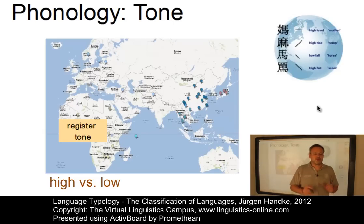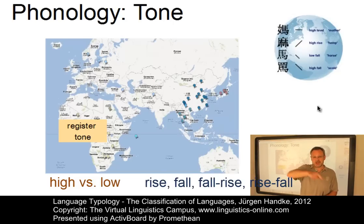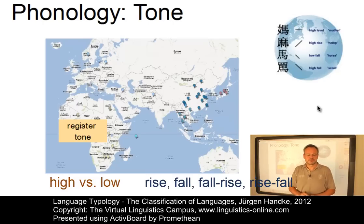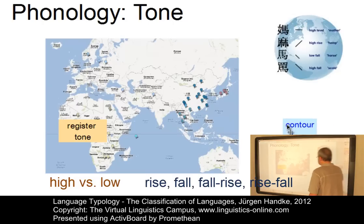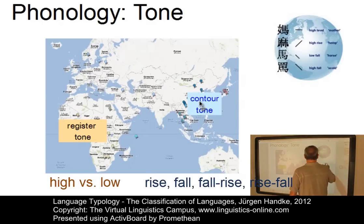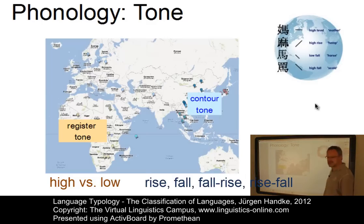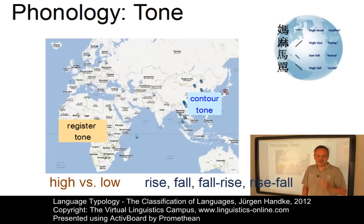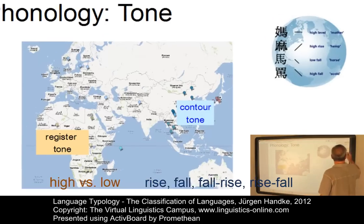More complex tone systems use contour tones — tones that involve gliding movements, for example rising tones, falling tones, fall-rise, or rise-fall. The most well-known contour tone languages can be found in Asia, for example in the Sino-Tibetan languages or in the Austro-Asian languages.